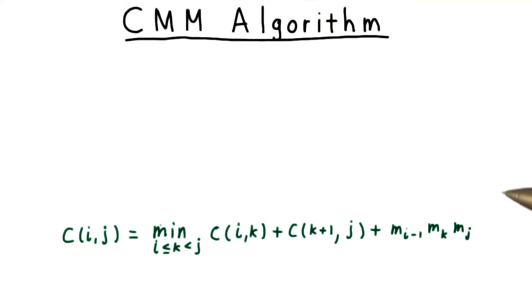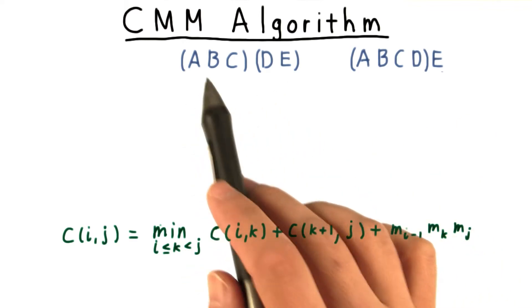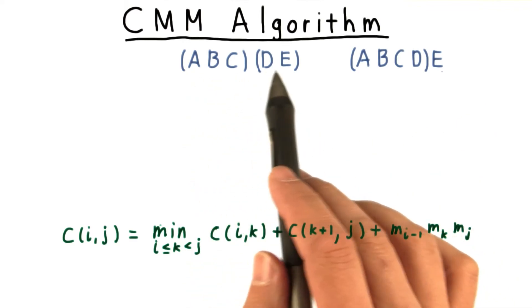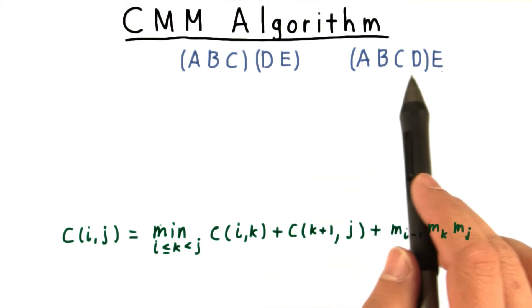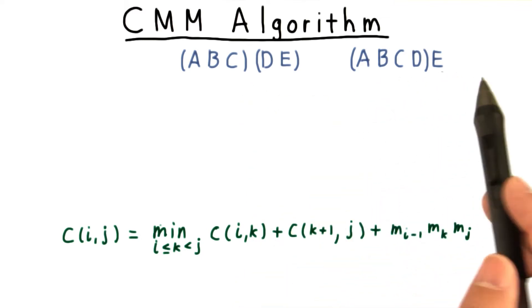Let's convince ourselves first that the recursive formulation would indeed involve some needless recomputation. Take the two top level partitions, ABC times DE on the one hand, and ABCD times E on the other.